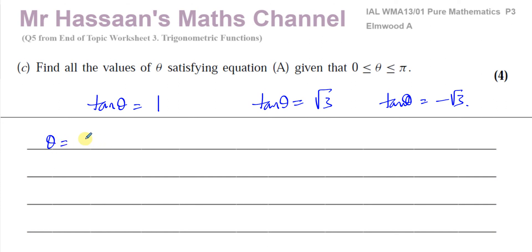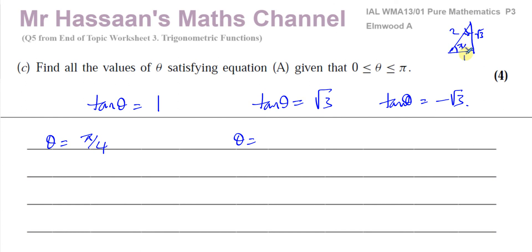For tanθ = 1: inverse tan of 1 is π/4. In the range 0 to π, that's the only solution — adding π gives more than π, and subtracting π gives less than 0. For tanθ = √3: using the 30-60-90 triangle with sides 1, √3, 2, we know tan(π/3) = √3, so θ = π/3. Adding or subtracting π puts it out of range, so π/3 is the only solution here.